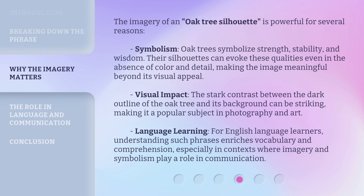The imagery of an oak tree silhouette is powerful for several reasons. Symbolism: oak trees symbolize strength, stability, and wisdom. Their silhouettes can evoke these qualities even in the absence of color and detail, making the image meaningful beyond its visual appeal. Visual impact: the stark contrast between the dark outline of the oak tree and its background can be striking, making it a popular subject in photography and art. For English language learners, understanding such phrases enriches vocabulary and comprehension, especially in contexts where imagery and symbolism play a role in communication.